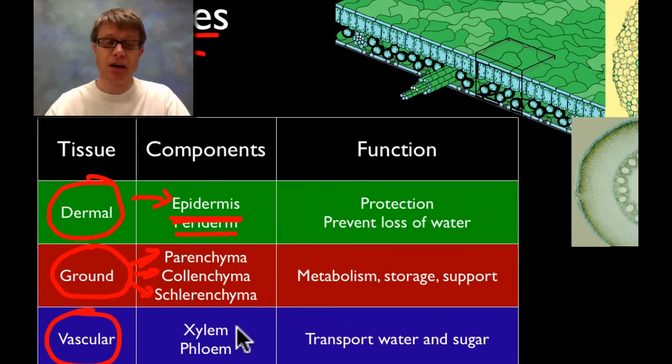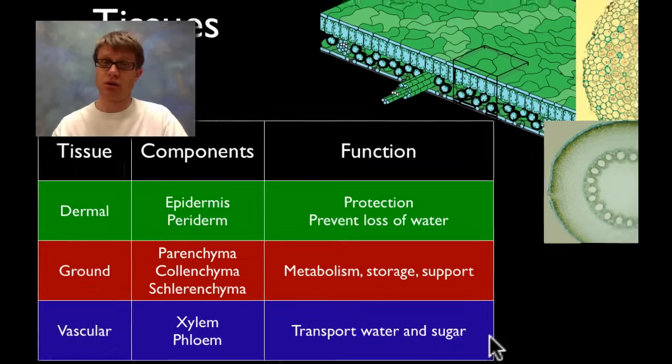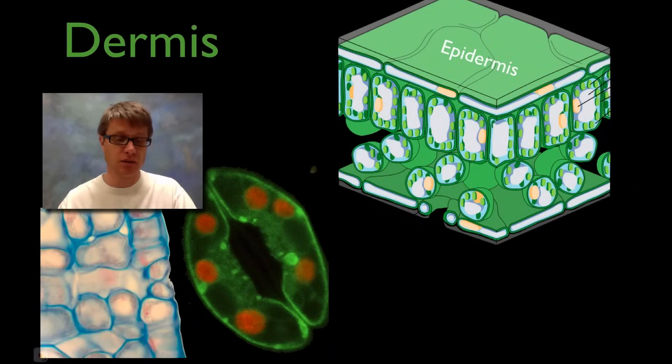And then finally we have the vascular tissue. That's made up of two types: xylem and phloem. And they're going to move the water and the sugar. So we'll get more specific to each of these.